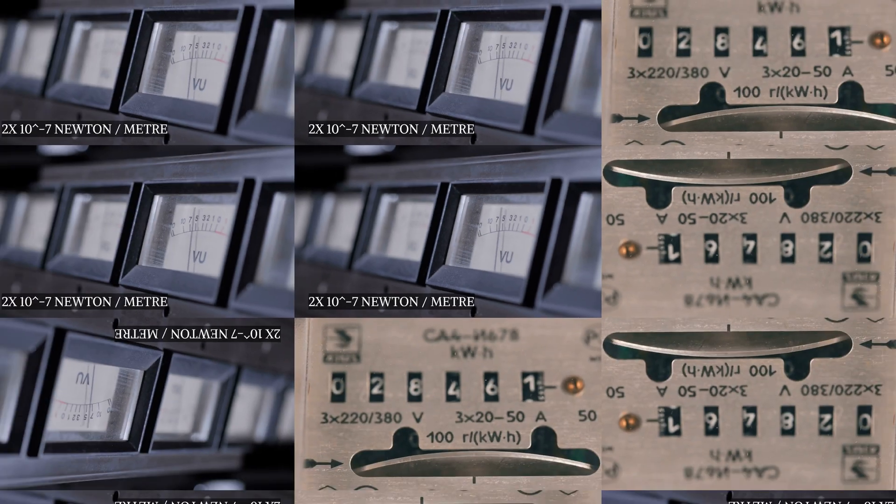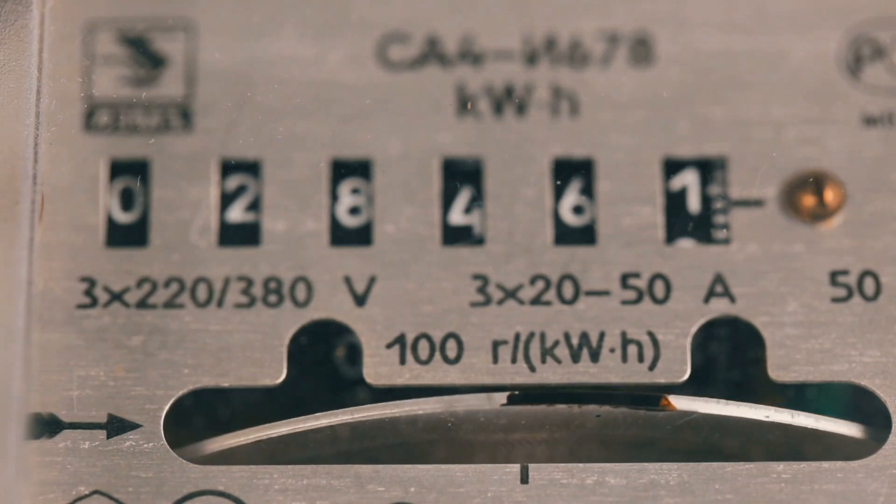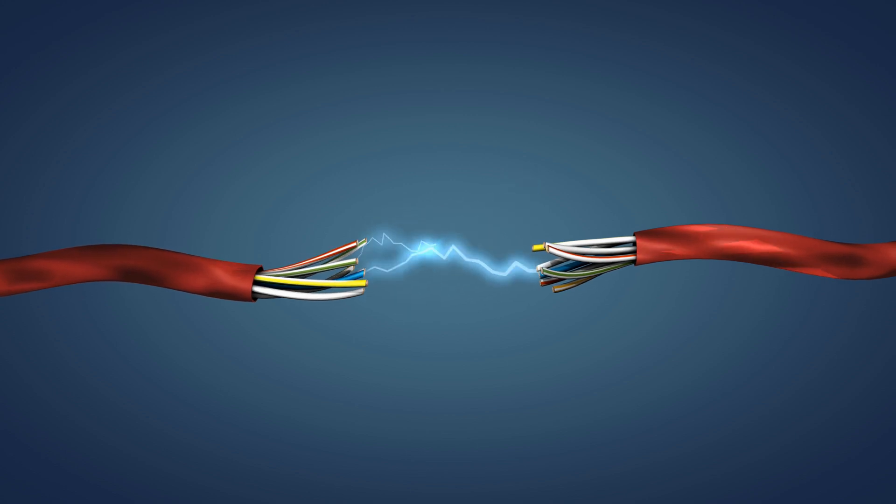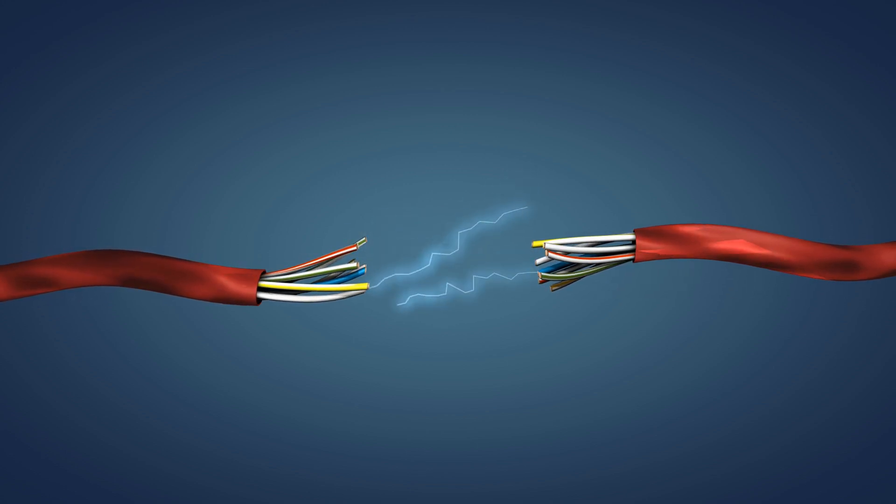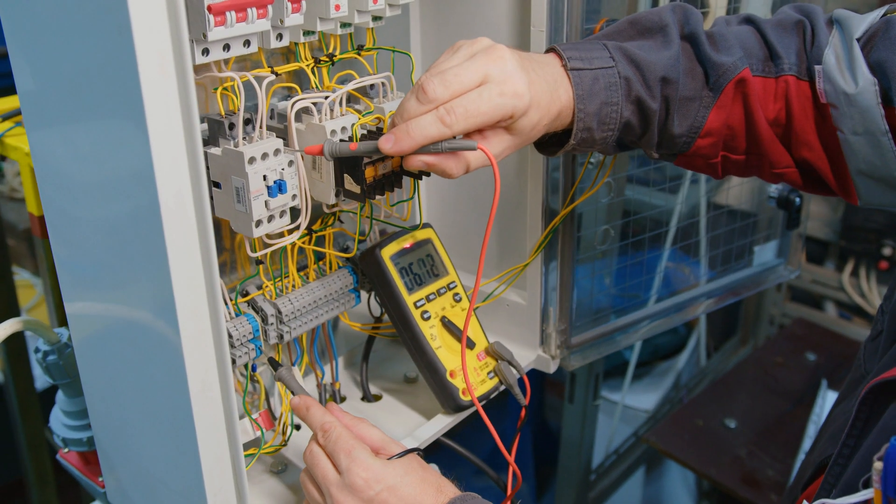As a result, we were able to obtain unit current, and current became a fundamental unit. The charge held by a wire carrying one ampere current in one second is known as a coulomb.